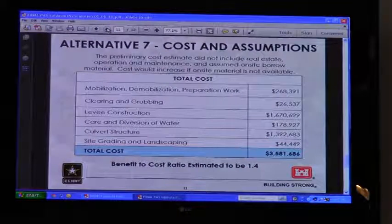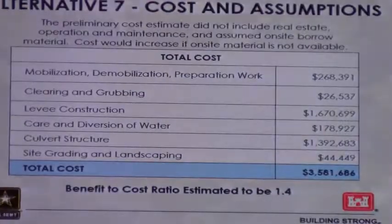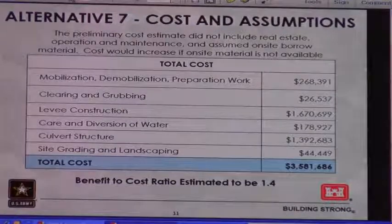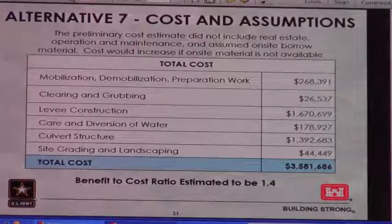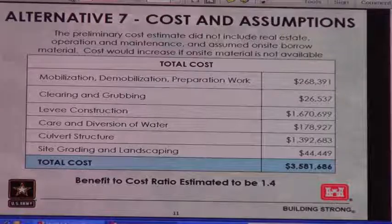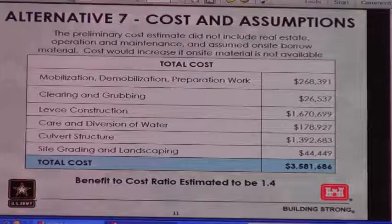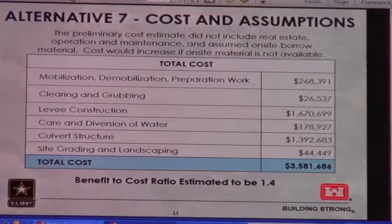In reconnaissance studies, we do a rough order-of-magnitude cost. That gives us an idea of what an alternative would cost. In this case, we looked at on-site materials as a way to reduce the cost of building the levee. This cost is very preliminary and rough. It doesn't include real estate or what we call operations and maintenance. It assumes on-site borrow material is used. If off-site borrow would be needed, we would see an increase in cost.